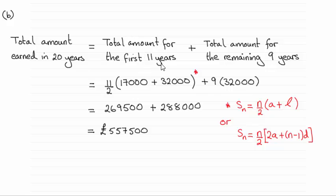When it comes to working out the total amount for the first 11 years, we can draw upon the sum of the first n terms of an arithmetic series, which is either given by this formula here, which is the one that I used, where we've got the number of terms n divided by 2, all multiplied by the first term plus the last term.